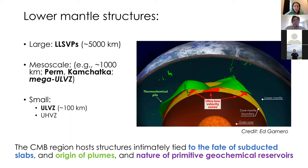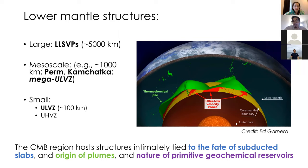LLSVPs show anomalously low shear velocities, less pronounced compressional velocity decreases, sharp lateral boundaries, and indication of higher-than-average density structures. Ever since seismologists began using tomographic inversions, we could see these structures in the lower mantle — typically on the scale of about 5,000 kilometers. So-called mesoscale structures have also been found, such as the Perm anomaly and Kamchatka anomaly, on the order of about 1,000 kilometers. Small-scale structures like ULVZs — ultra-low velocity zones — are orders of magnitude smaller, though omega ULVZs can be close to 1,000 kilometers.